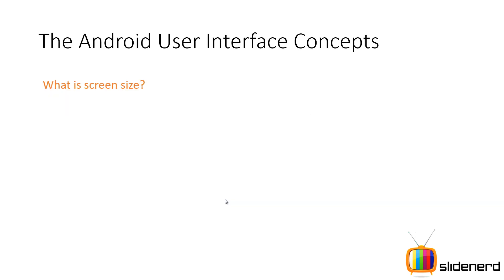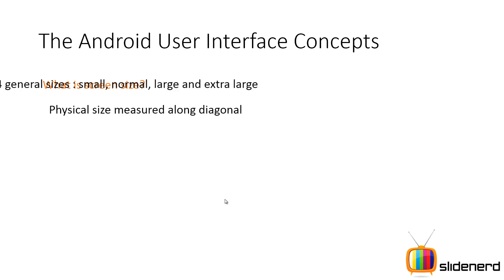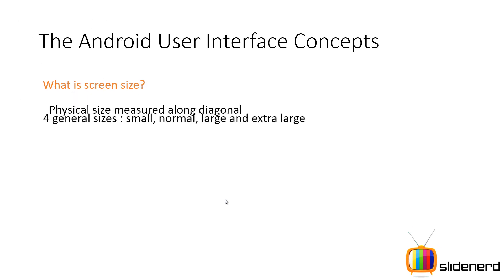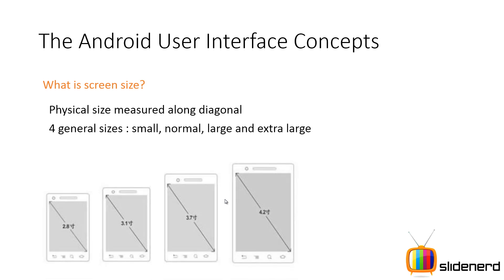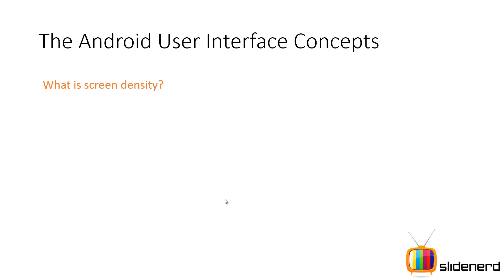The first question that arises is: what is screen size? This is a very simple question but in Android it is easily misunderstood if you are a beginner. The physical size measured along the diagonal is the screen size. There are four categories: small, normal, large, and extra large. So you measure the length of the screen along the diagonal — that is what screen size is all about.